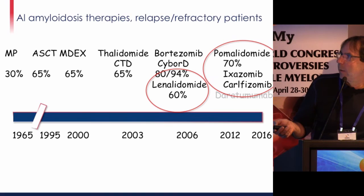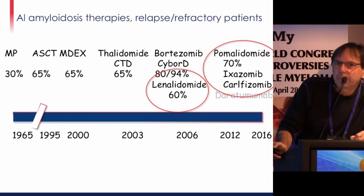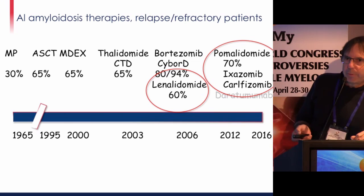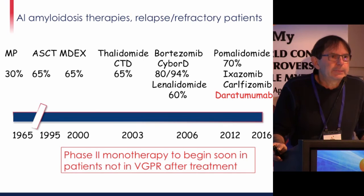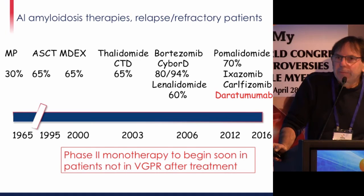For well-advanced refractory patients, IMiDs — lenalidomide and pomalidomide — can rescue patients who don't respond to MDex or bortezomib-dex. We can also use new proteasome inhibitors. One potentially very interesting drug class in this disease is anti-CD38 antibodies, and we are about to begin a phase 2 monotherapy trial in France in patients not achieving VGPR after treatment.